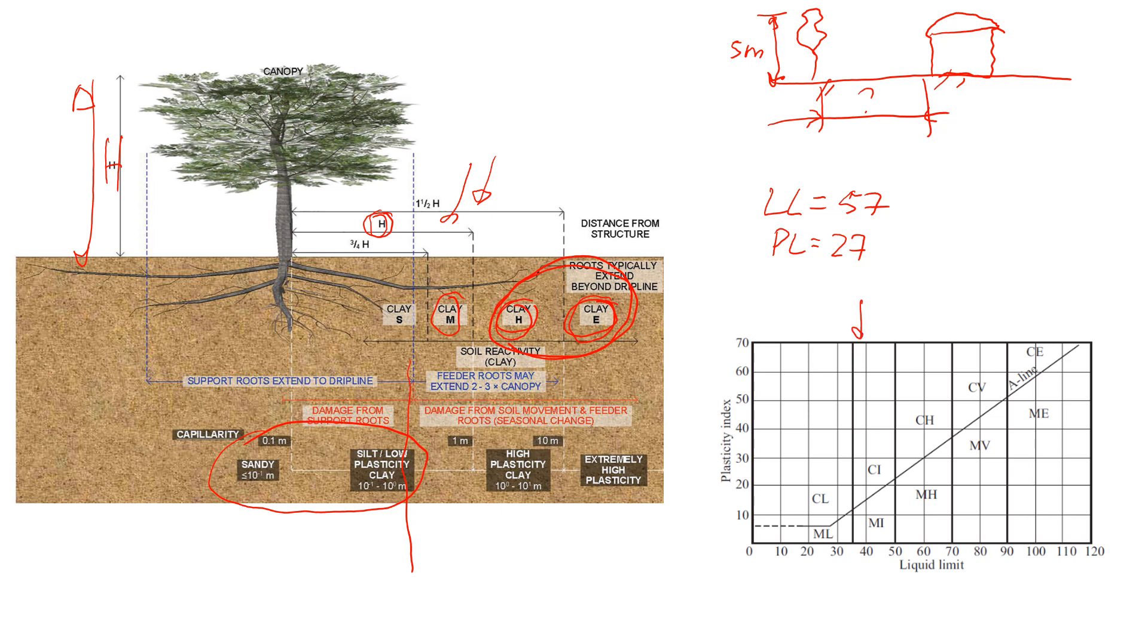To do that, we need to classify the soil. This is a Casagrande plasticity chart. I have a few videos that show, describe how to use this chart. You see here, we have plasticity index and we have liquid limit. Liquid limit here is 57. We're going to find plasticity index, which is liquid limit minus plastic limit. 57 minus 27 is equal to 30.